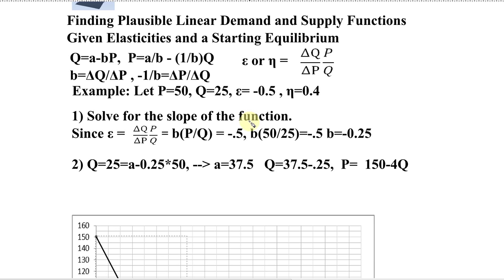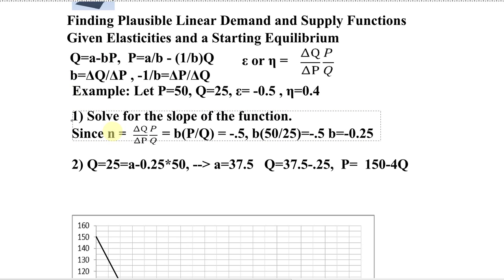Okay, if you do the same thing for supply, you're going to be getting, we just have to replace the epsilon here with eta. ΔQ/ΔP times P over Q is going to equal the slope times P over Q, but our supply elasticity is positive 0.4. So we have the same price and quantity, so that's still 50 over 25 equals 2, and we know that has to equal 0.4.